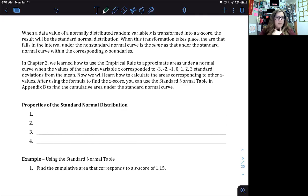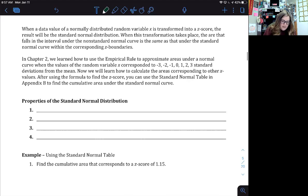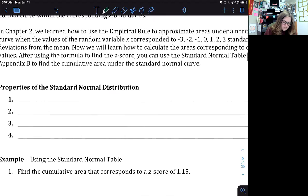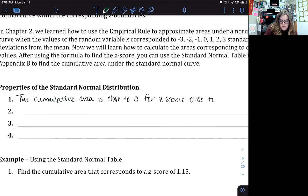So a couple properties we want to go over first with that probability. First one, the cumulative area is close to zero for z scores close to z equals negative 3.49.